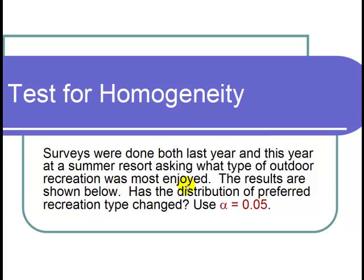most enjoyed. The results are shown below. Has the distribution of preferred recreation type changed? Use a level of significance alpha equals 0.05.